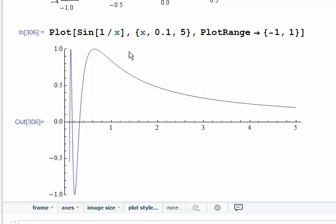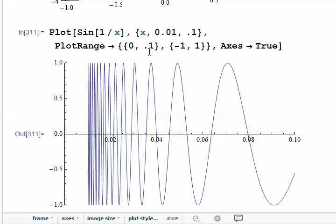Sine 1 over x is interesting because it tends toward an infinite frequency as you get closer and closer to 0. Here it is zoomed in a little further. I didn't bother to plot beyond 0.1 because it just gets infinitely dense through there.